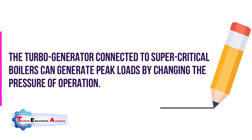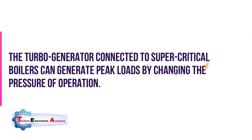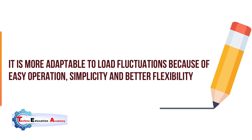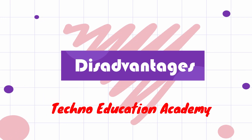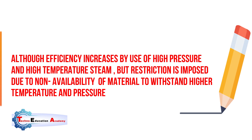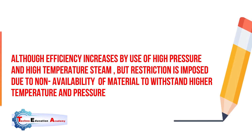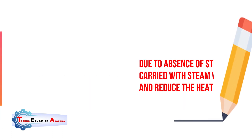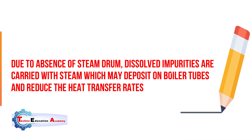The turbo-generator connected to supercritical boilers can generate peak loads by changing the pressure of operation. It is more adaptable to load fluctuation due to easy operation, simplicity, and better flexibility. On the disadvantage side: although efficiency increases with high pressure and high temperature steam, a restriction is imposed due to the unavailability of materials that can withstand higher temperatures and pressures. Difficulty is also experienced in turbines and condensers due to handling of large volumes of steam. Additionally, due to the absence of a steam drum, dissolved impurities are carried with the steam and may deposit on boiler tubes, reducing the heat transfer rate.